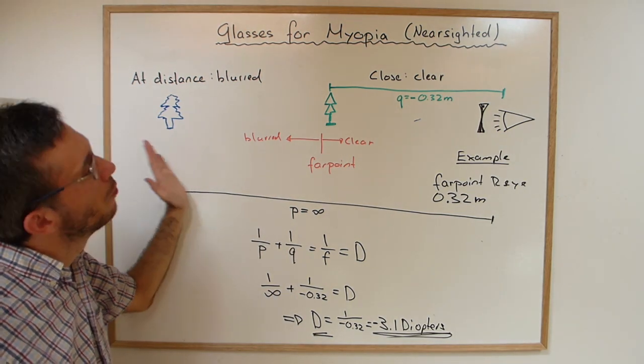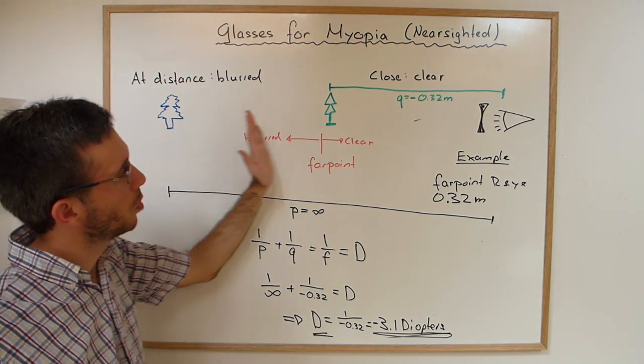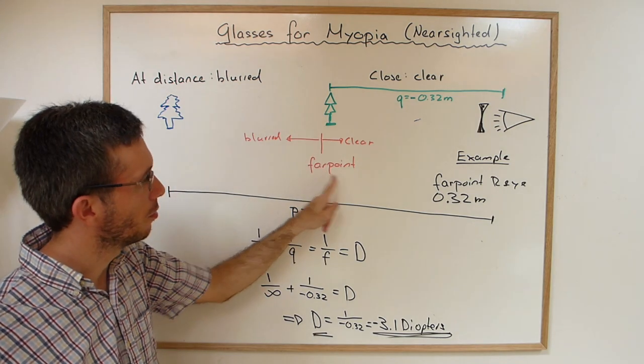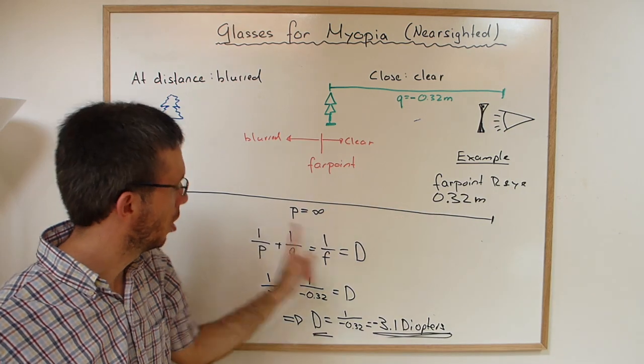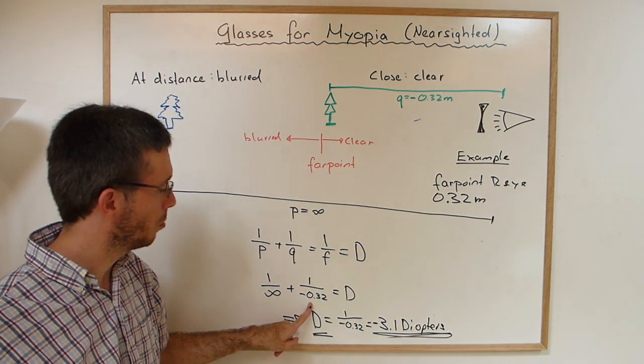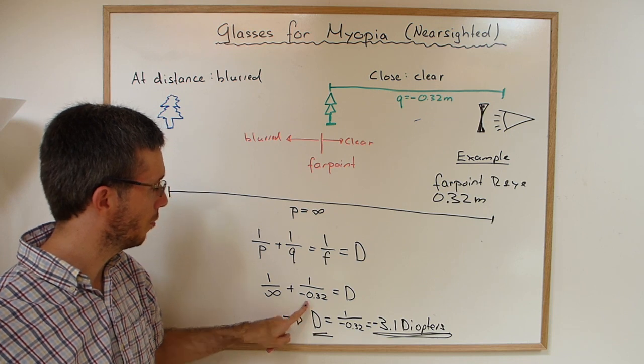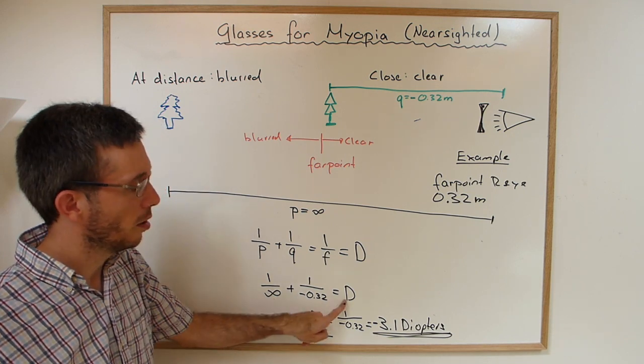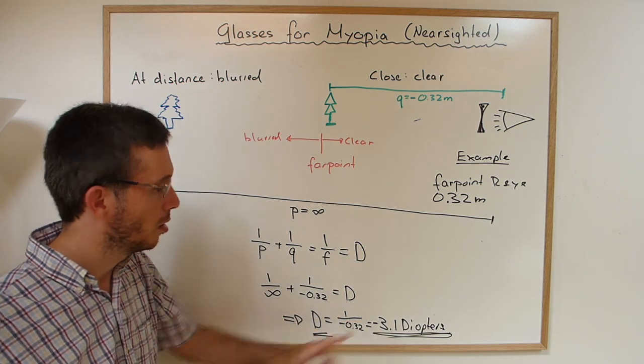So just to recap, figure out how close the object has to come until you see clearly. This is your far point distance. Plug that in as the image distance, because that's where you want the image of the glasses to create for objects that are at infinite distance away, and then you get your power in diopters.